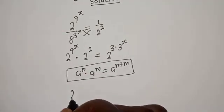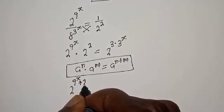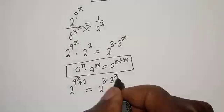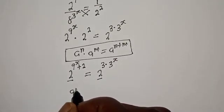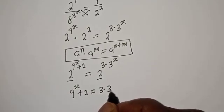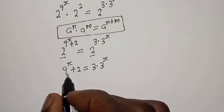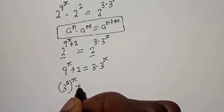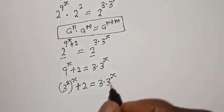So we have 2 raised to power 9 raised to power s plus 2 is equal to 2 raised to power 3 multiplied by 3 raised to power s. Since we have the same base, we work with the exponents. Here we have 9 raised to power s plus 2 is equal to 3 multiplied by 3 raised to power s. Then 9 raised to power s can be written as 3 squared raised to power s.